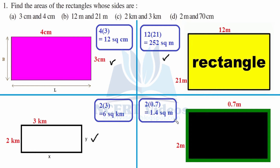Last part: 2 meter and 70 centimeter. There is a problem with units — we have to make them similar. So we will change 70 centimeter into meter: this is 0.7 meter, because 1 meter equals 100 centimeter. When we multiply 2 by 0.7, we get 1.4 square meter. This was your first question.